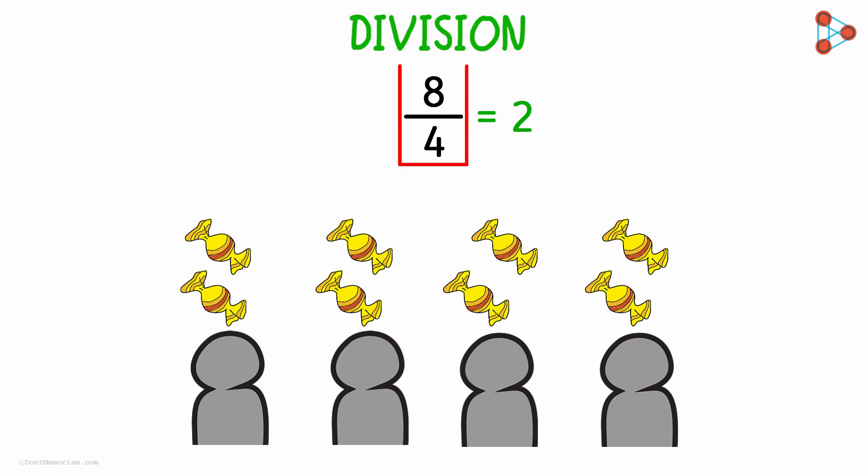Yes, we divided 8 by 4 and that gave us 2. Or in other words, we divided the number of chocolates available equally among all the people.